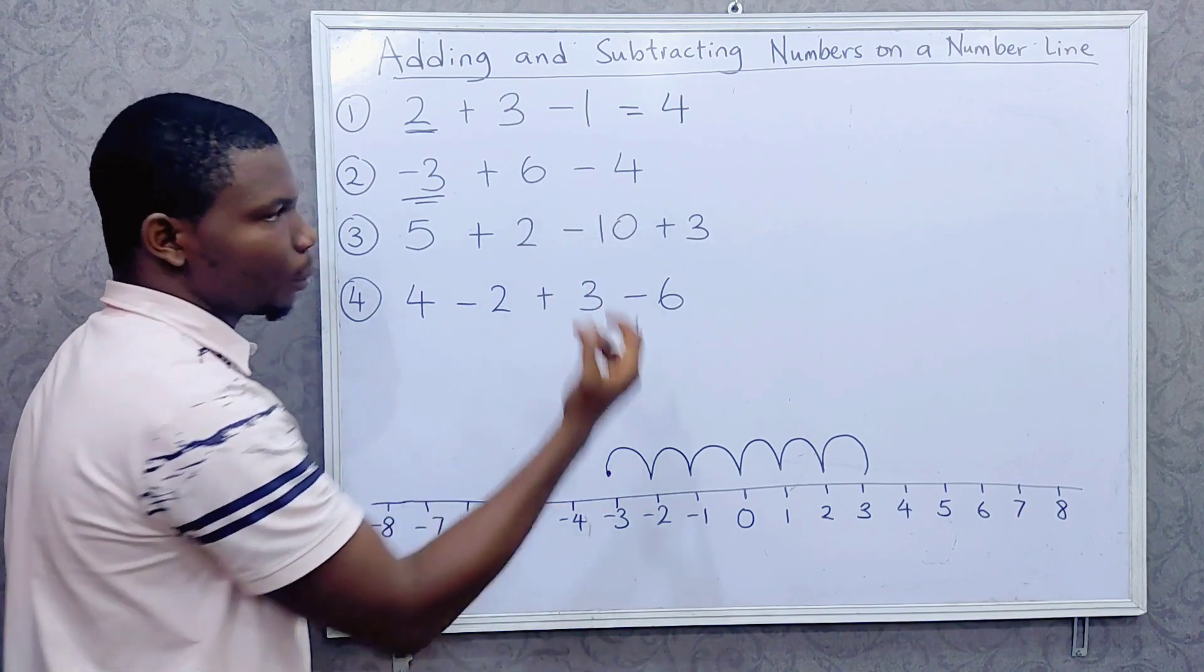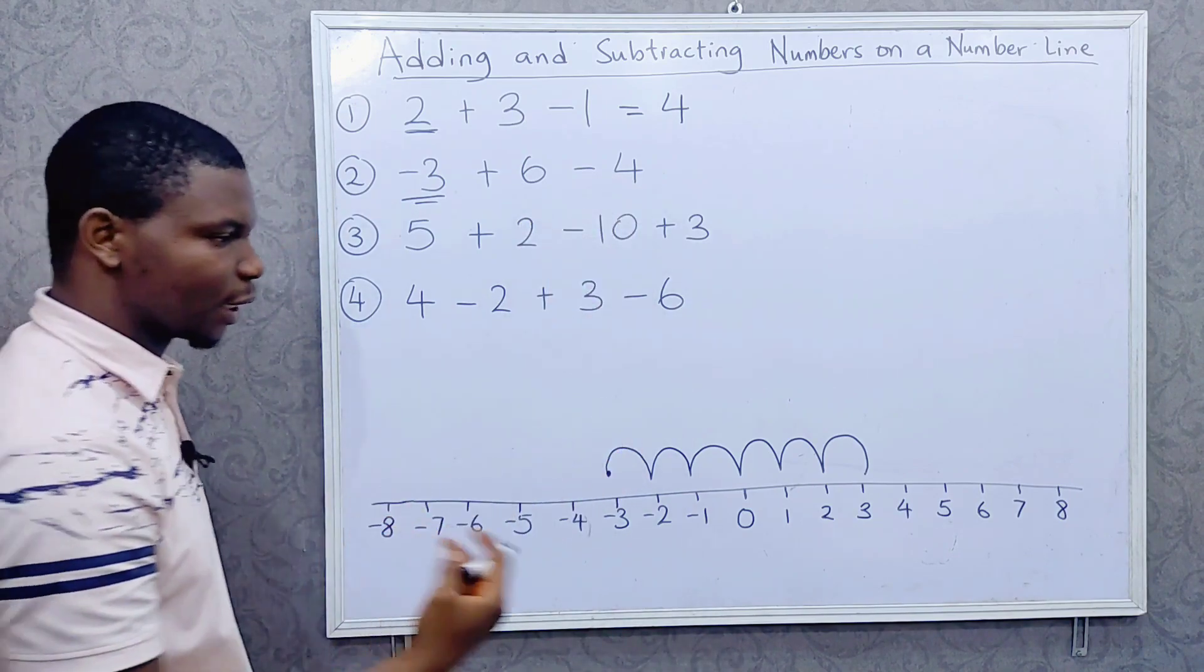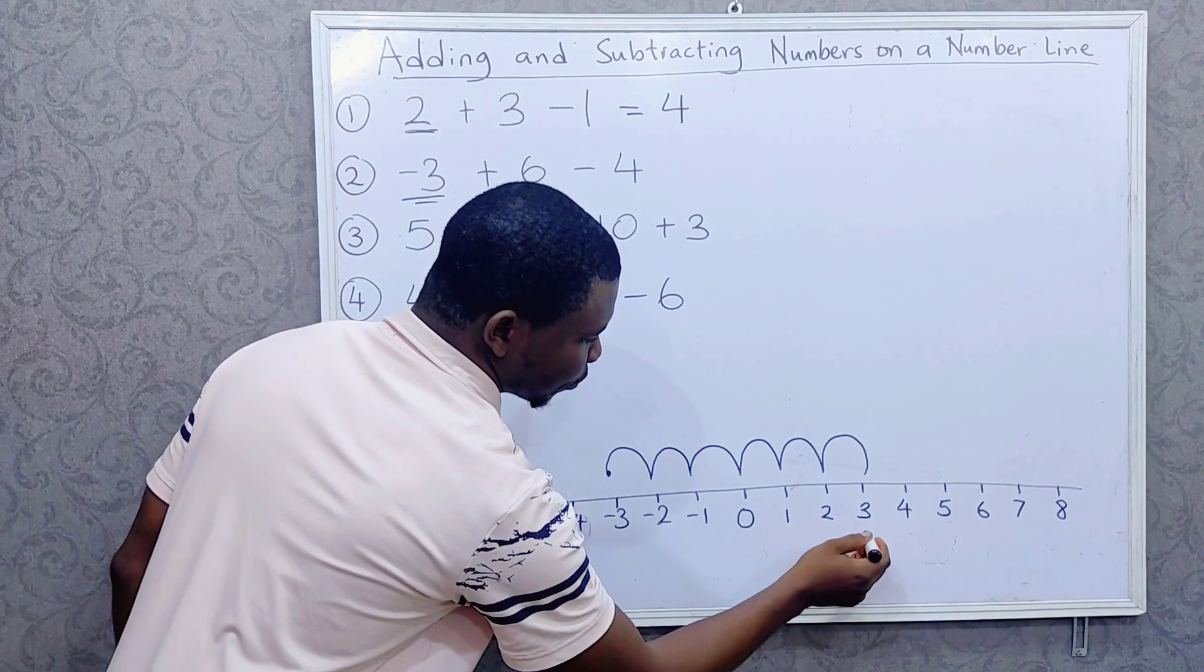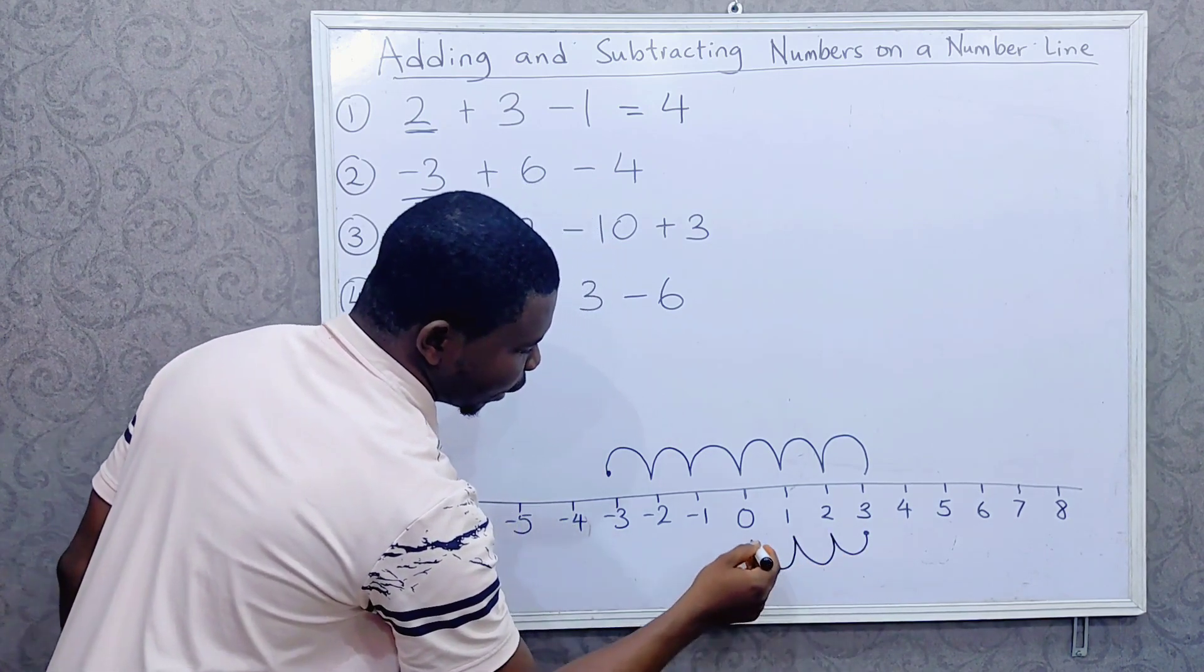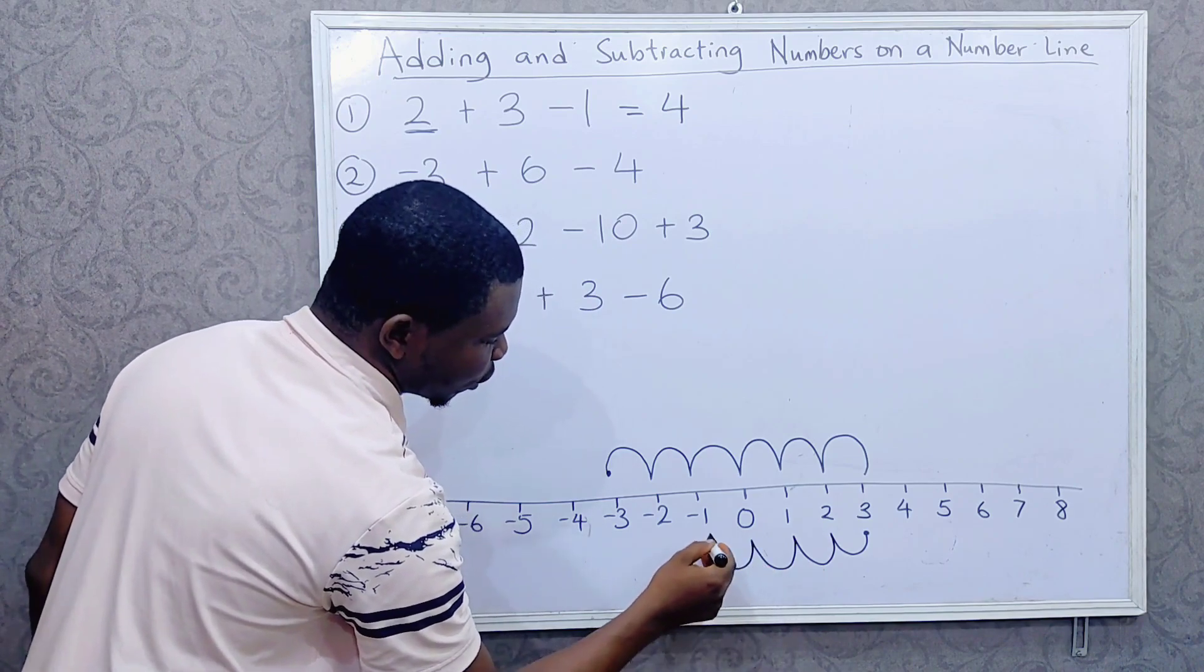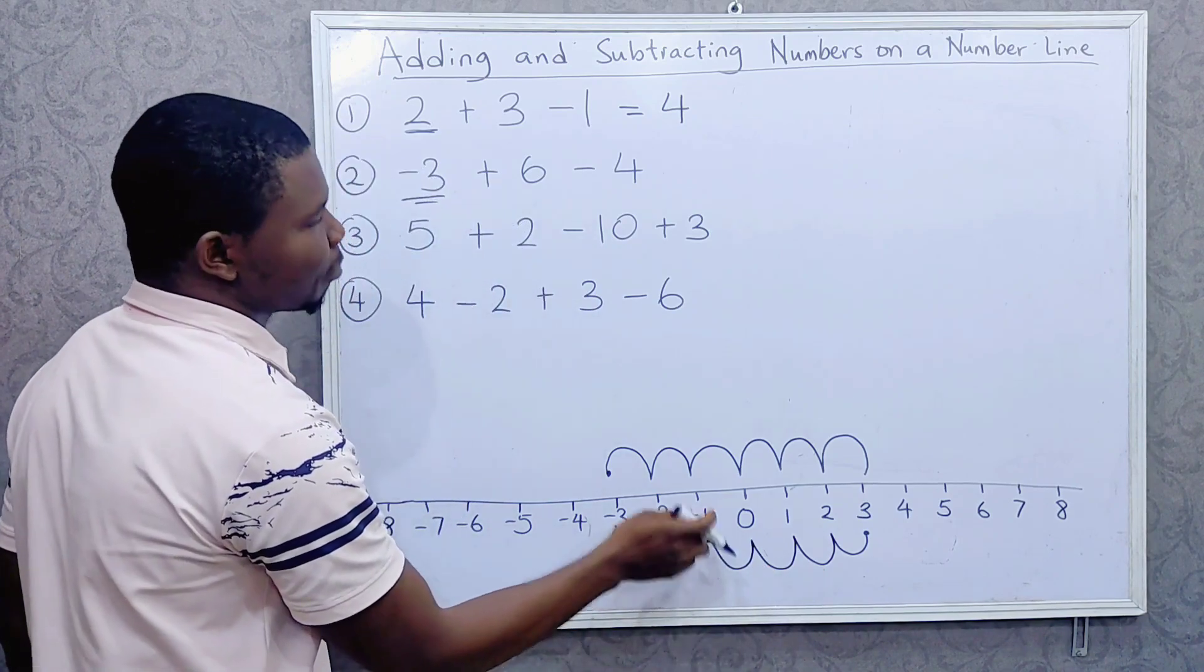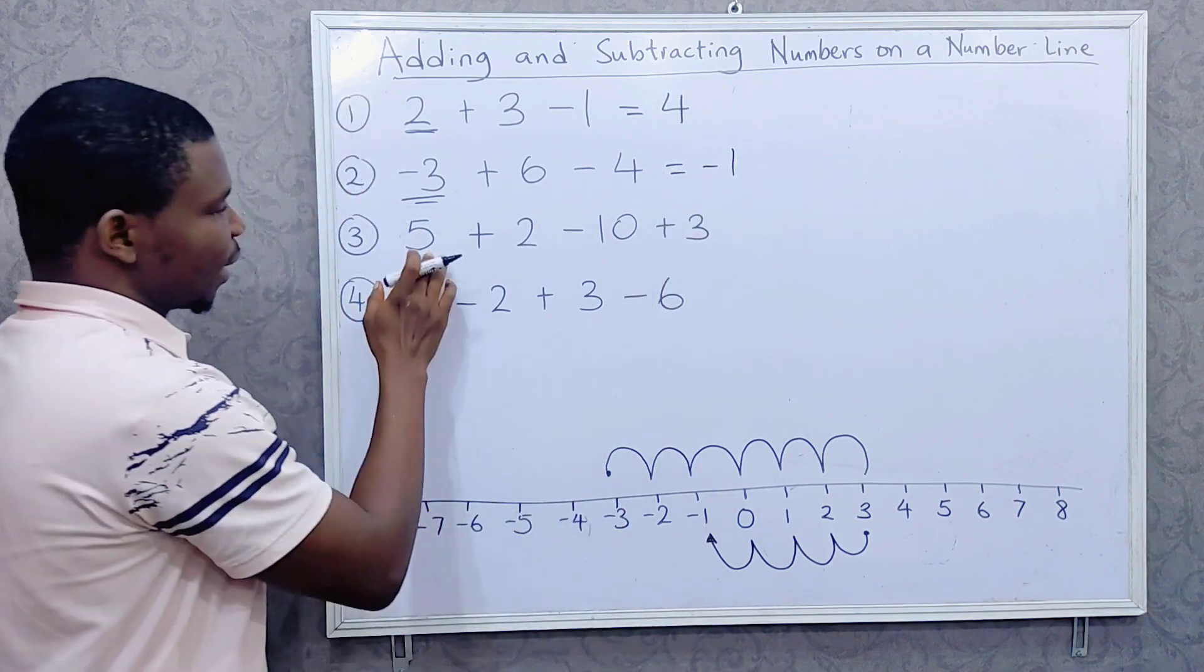Then minus 4. Minus 4 means you go backward 4 times. So we're at positive 3, we are going backward now: 1, 2, 3, 4. So what's the answer? The answer is minus 1.